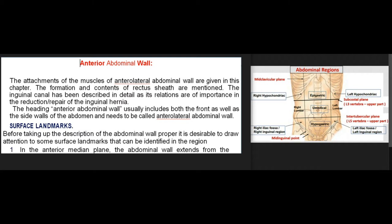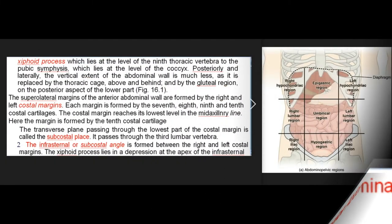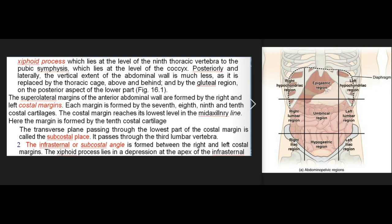Surface Landmarks. Before taking up the description of the abdominal wall proper, it is desirable to draw attention to some surface landmarks that can be identified in the region. In the anterior median plane, the abdominal wall extends from the xiphoid process, which lies at the level of the 9th thoracic vertebra, to the pubic symphysis, which lies at the level of the coccyx. Posteriorly and laterally, the vertical extent of the abdominal wall is much less, as it is replaced by the thoracic cage above and behind, and by the gluteal region on the posterior aspect of the lower part.